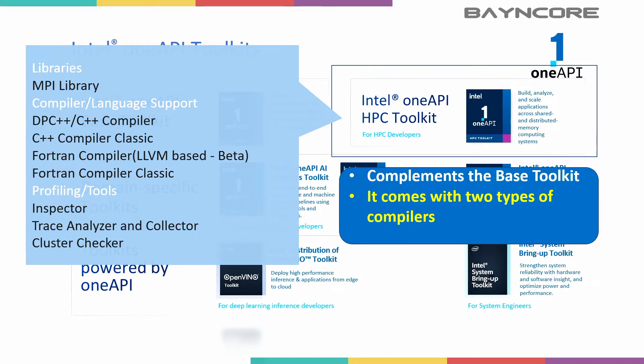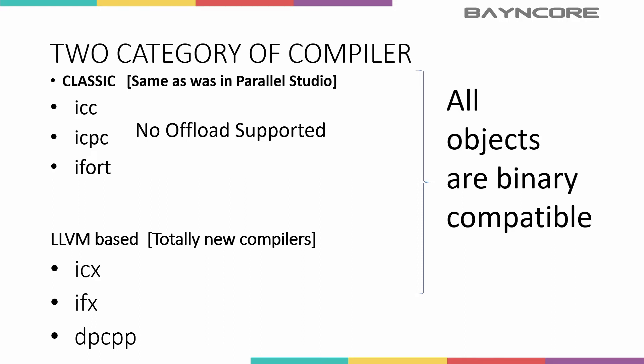Secondly, it comes with two types of compilers: the classic compilers and also the LLVM-based compilers. The classic compilers are a continuation of the compilers that come from Intel Parallel Studio — so ICC, ICPC, and iFort. The LLVM compilers are new and incorporate support for OneAPI including offloading to accelerators. Note that at this time the LLVM Fortran compiler, iFx, is still in beta and still subject to major updates.